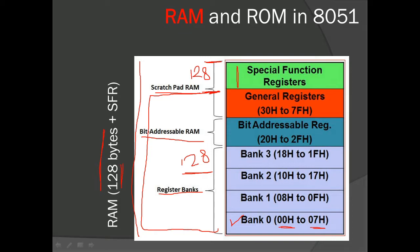The same addressing structure applies to register bank 1, 2, and 3, giving us a total of 32 registers. Since the name R0 exists in all four banks, which register we use is decided by the bank selection registers present in the special function registers.